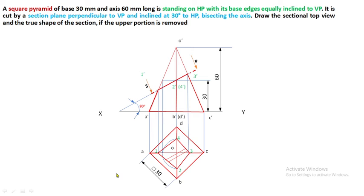Do hatching in between the shape 1, 2, 3, 4. This hatching portion is called the apparent shape of section — this is not the true shape, it is the sectional top view. Whenever the section plane is inclined to the plane of projection, the shape obtained is not the true shape; such a shape is called the apparent shape of section.